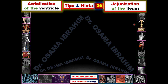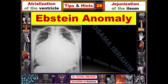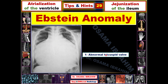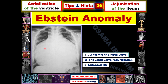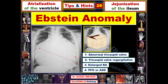In Ebstein anomaly, the chest X-ray shows the heart with abnormalities summarized as follows: the abnormal tricuspid valve results in tricuspid regurgitation, which causes enlargement of the right atrium, appearing as increased bulging of the heart on the right side. This leads to a defect between the atrial walls in the form of a patent foramen ovale or atrial septal defect. This defect also increases the size of the right ventricle, resulting in elevation of the heart apex.